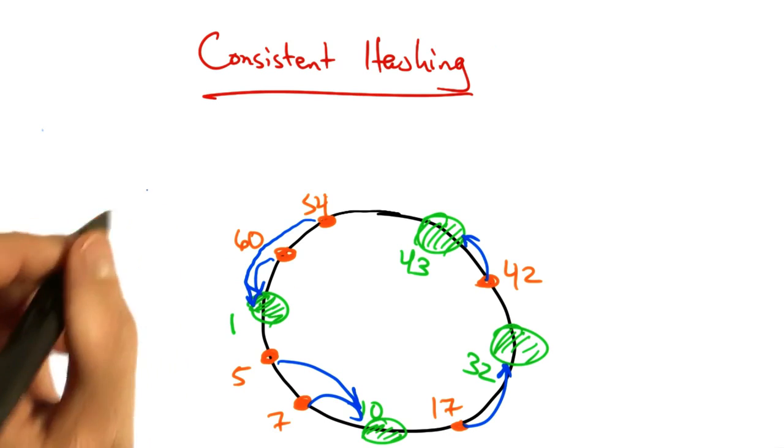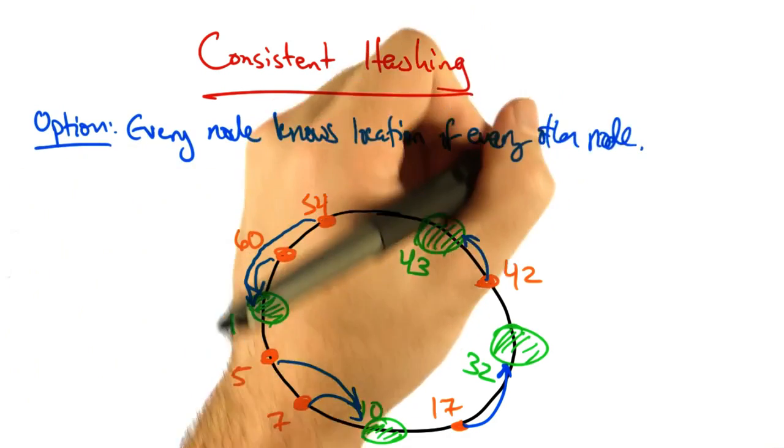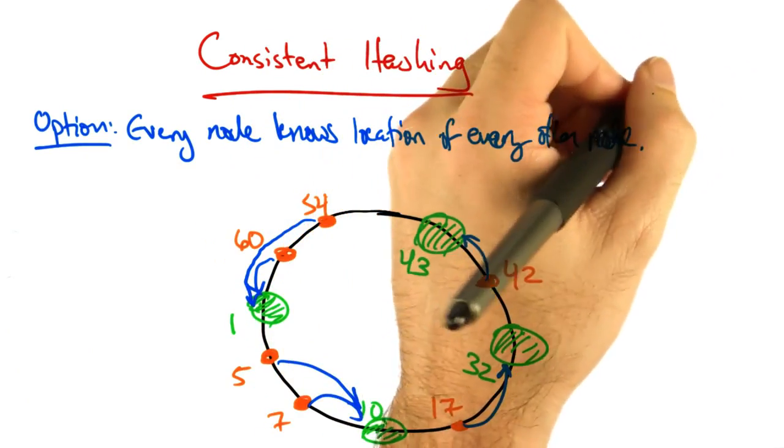Let's talk a little bit about how to implement consistent hashing. One option is for every node to know the location of every other node.